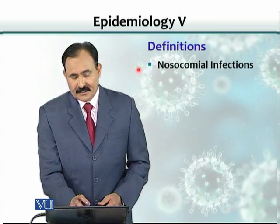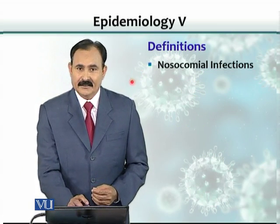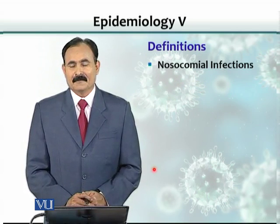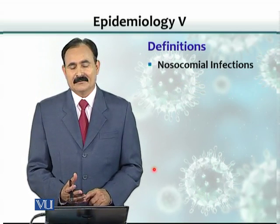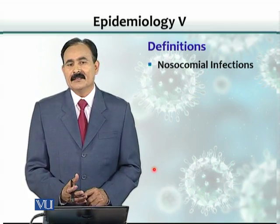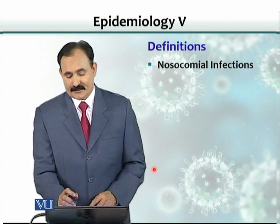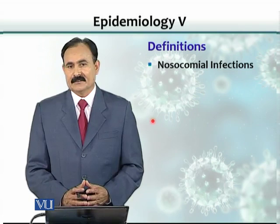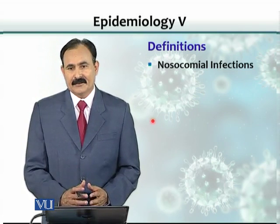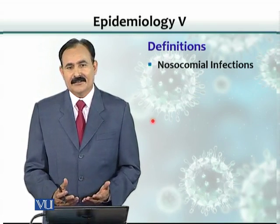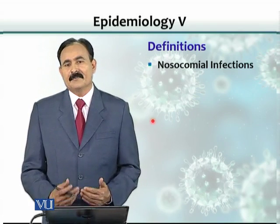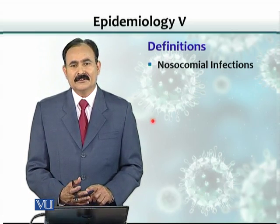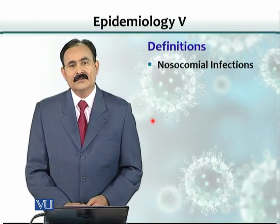Another definition we must know is nosocomial infections. Nosocomial infections are important — the vehicles involved are mostly people or fomites like inanimate objects in the hospital. These are infections acquired from hospitals, especially by patients who came for a different treatment. For example, a heart patient who came for treatment can pick up infections through catheters, used syringes, or through nurses and doctors. These are called nosocomial infections.